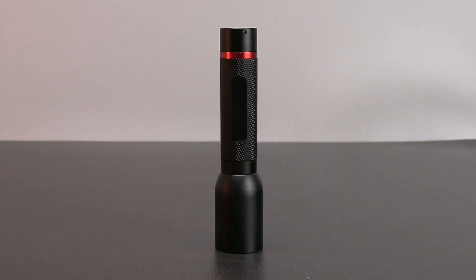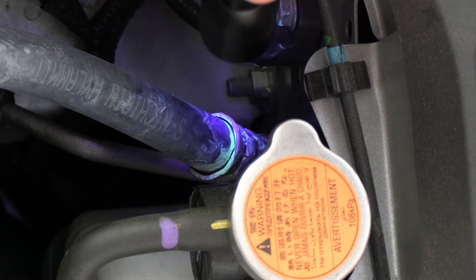AST 200 IR includes a small UV inspection light that can help verify leaks when fluorescent dye is already in the AC system.